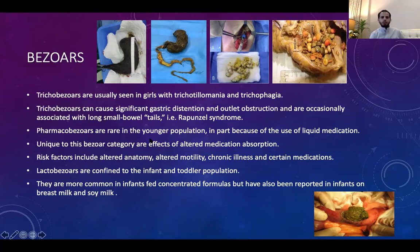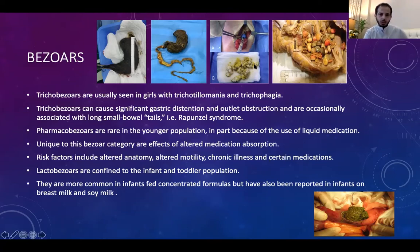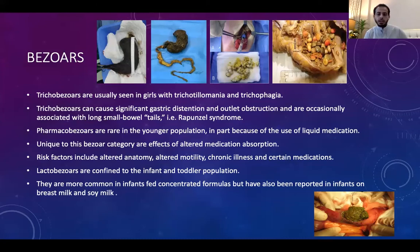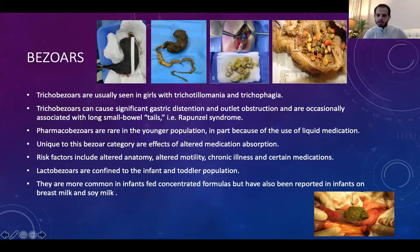Pharmacobezoars are less common in the younger pediatric population — in young children the material tends to be liquid, while in adolescents or adults it is tablet form. Risk factors include altered anatomy, altered motility, chronic illness, or certain medications. An important point: upper GI contrast study may cause harm in a suspected pharmacobezoar by dislodging medication distally, leading to systemic absorption and toxicity. Lactobezoars are confined to infants commonly fed concentrated formula, but also reported with breast milk and soy milk. Phytobezoars occur when certain fruits or vegetables accumulate and cause gastric outlet obstruction.